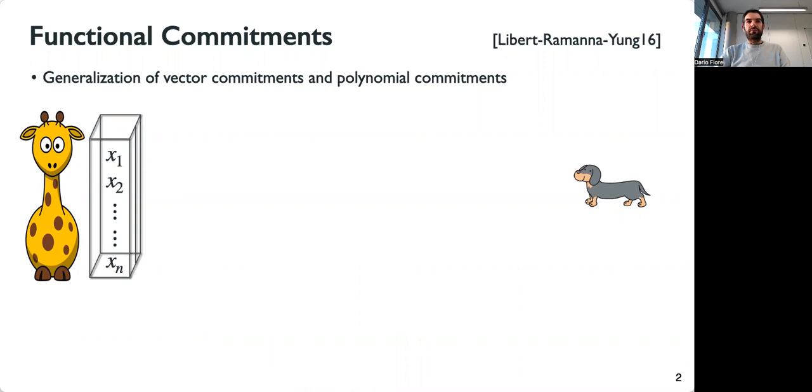The idea of functional commitments is that we have two parties, a sender and a receiver. We think of the sender as a big party that can hold a large vector X, and the receiver has little resources.